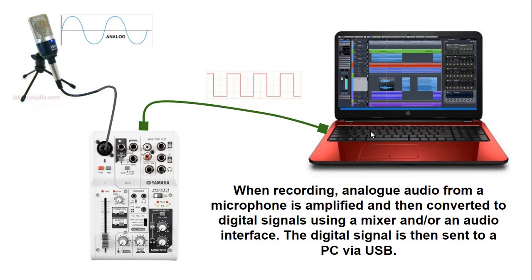When we have a microphone, we have an analog audio. When we're recording analog audio from a microphone, it is amplified by the mixer or the audio interface, and then converted to a digital signal using the mixer and or the audio interface, and this digital signal is sent to the PC by the USB.